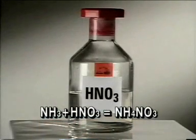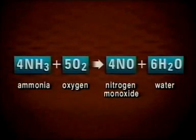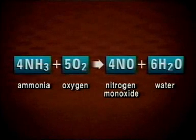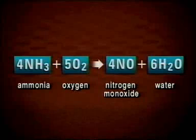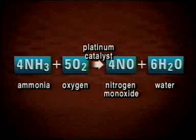The other chemical needed is nitric acid. To make nitric acid on an industrial scale, ammonia gas is oxidized in a huge burner. Ammonia reacts with oxygen in the air to produce nitrogen monoxide and water, but it needs a platinum catalyst for the reaction to happen at a reasonable rate.